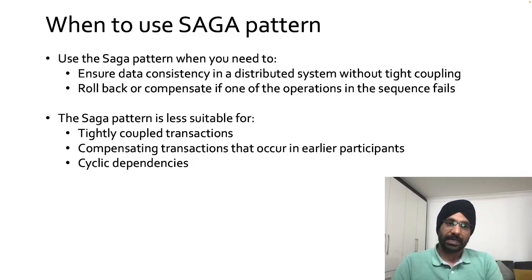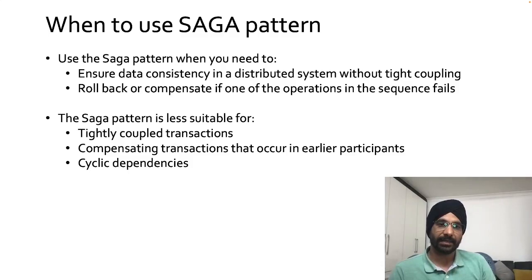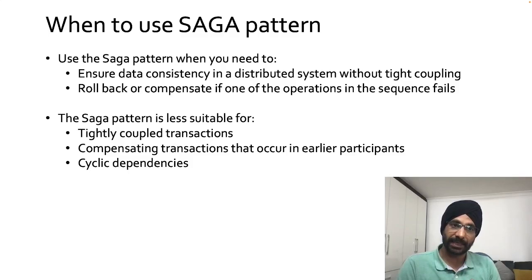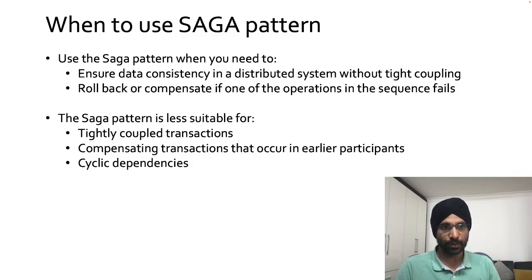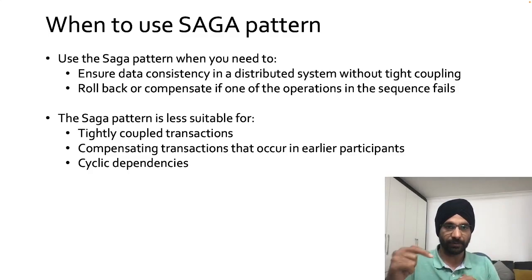Use the SAGA pattern when you need to ensure data consistency in a distributed system without tight coupling, and when you need to roll back or compensate if one operation in the sequence fails. The SAGA pattern is less suitable for tightly coupled transactions, for compensating transitions that occur in earlier participants, and when you have cyclic dependencies — for example, service A invoking B which then invokes A again.